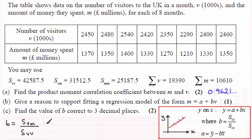And we just take our values from what we're given up here. And so for SVM it is this one here, 31512.5, and we divide this then by SVV which is here at 42587.5.